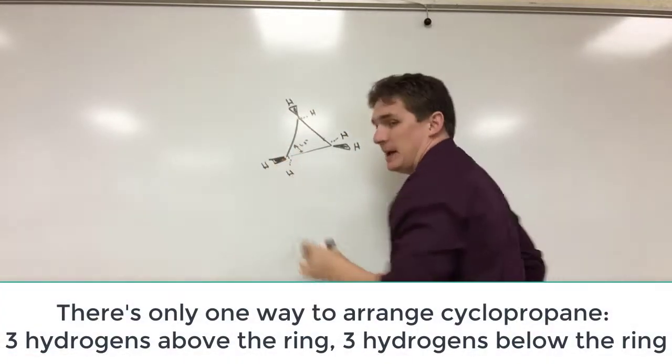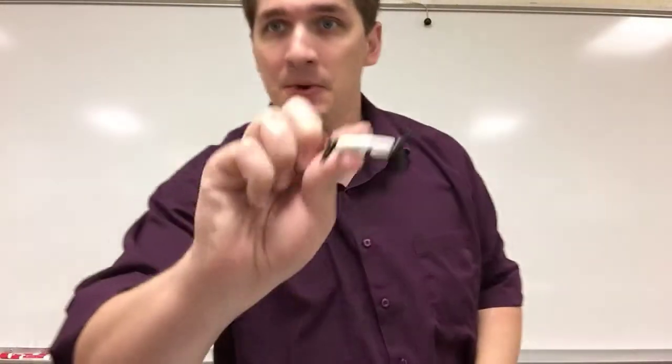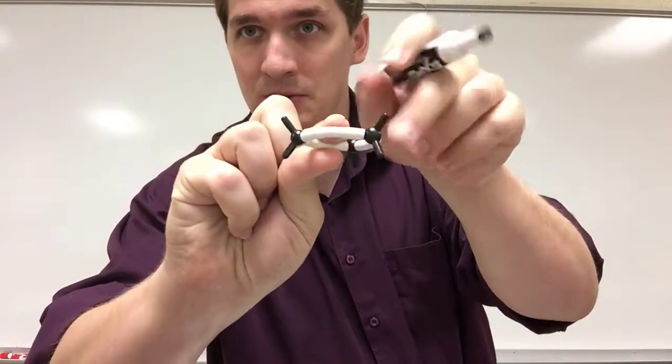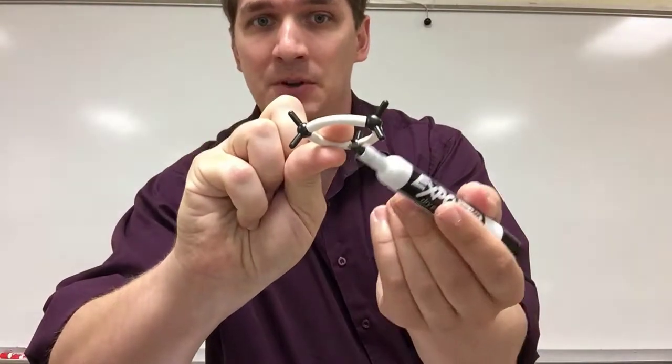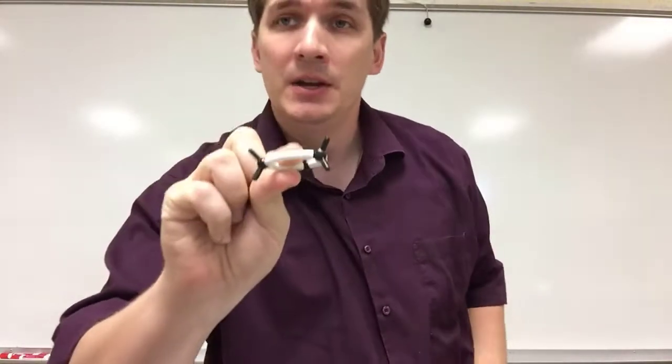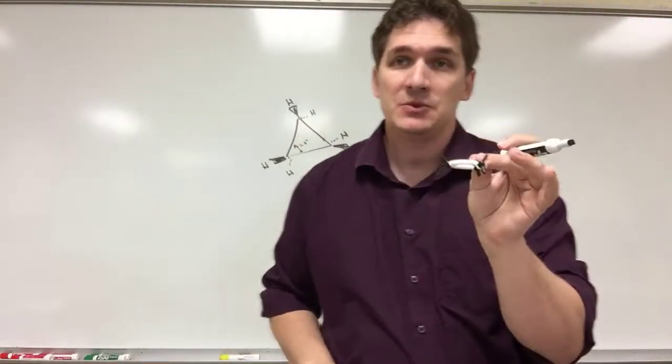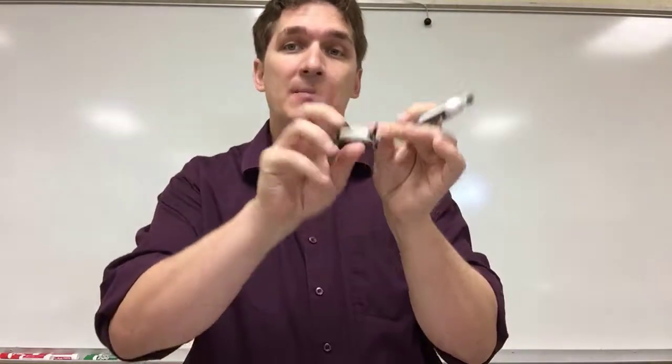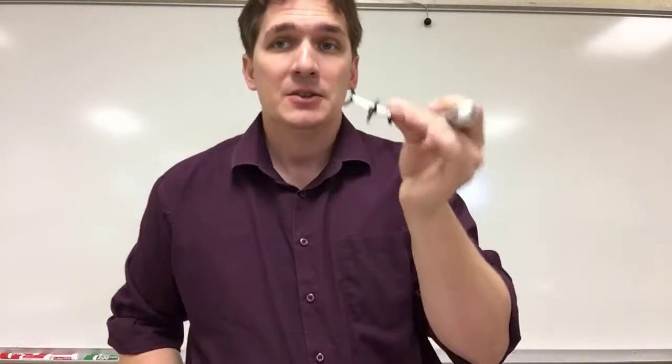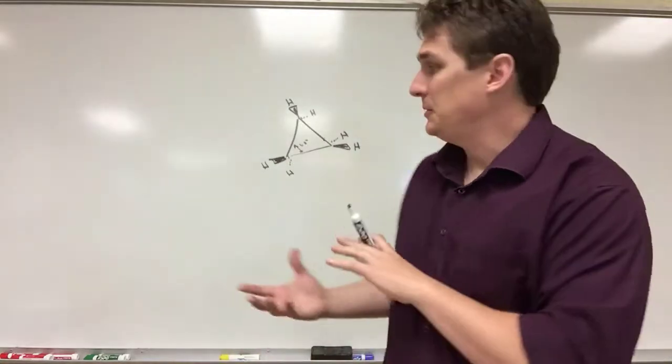But because we do have hydrogens both above and below the ring, so the three that would connect here, here, and here, and three that would connect below, we actually need to start expressing the stereochemistry when we start talking about how things are aligned if we have more than one species on this ring. So this is your C3 ring.